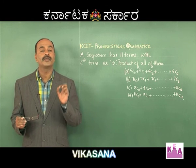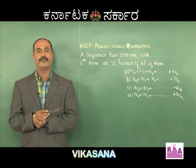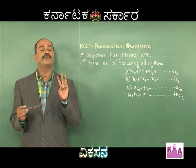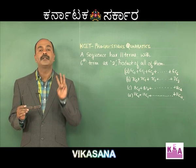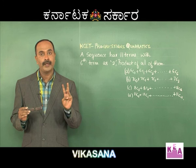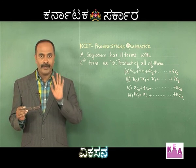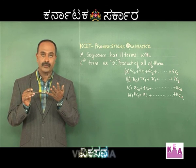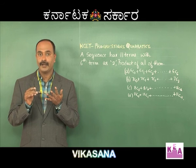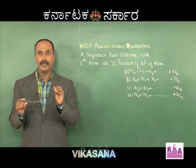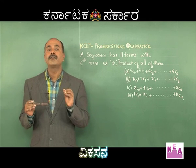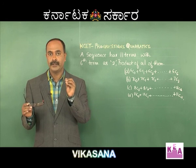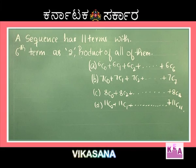Let me introduce an important concept. If three terms of a GP are given, always write the terms as a/r, a, and ar. If five terms of a GP are given, write them as a/r², a/r, a, ar, ar². In simple terms, if an odd number of terms of a GP are given, write the middle term as 'a' and extend the other terms accordingly.